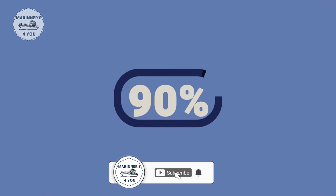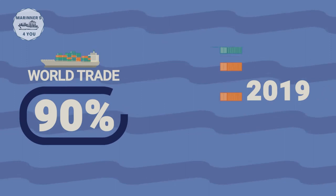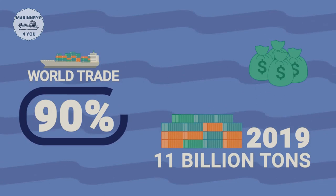Did you know 90% of world trade is transported by ships? In 2019, more than 11 billion tons of goods were shipped across the oceans. Economically, that is about $4 trillion annually.